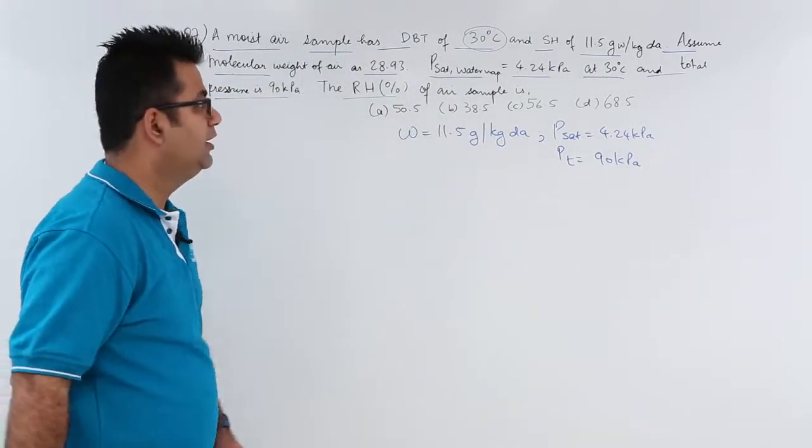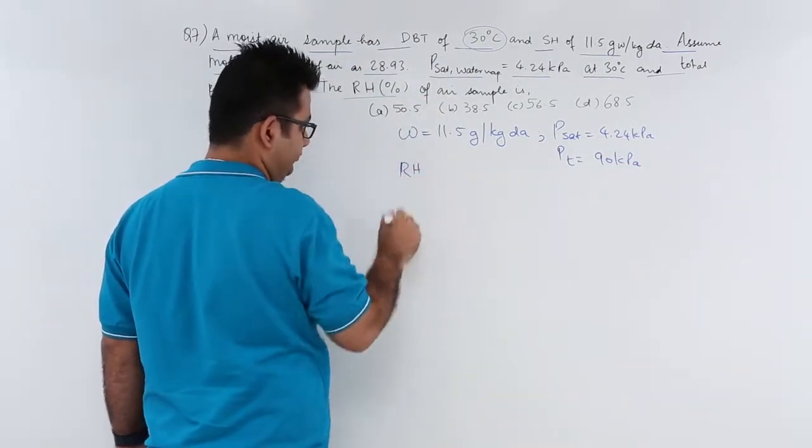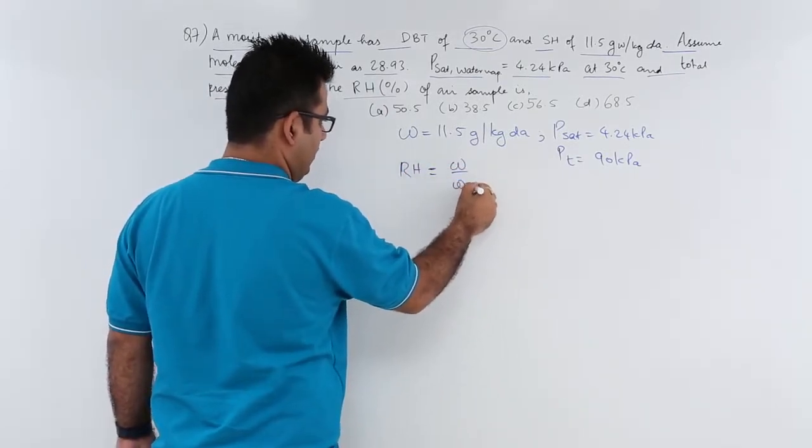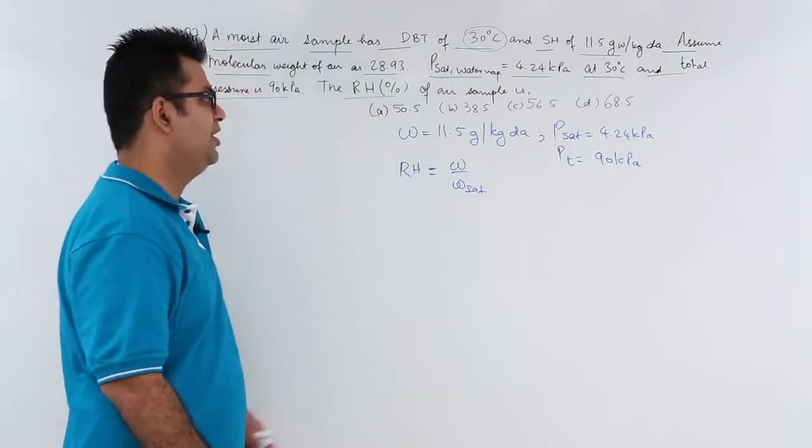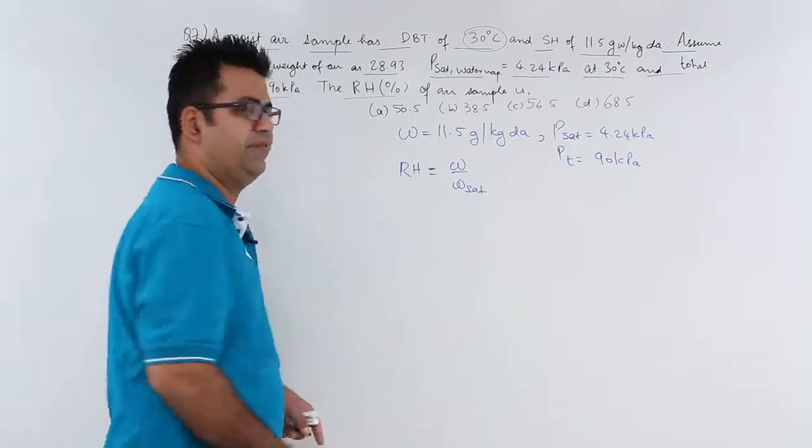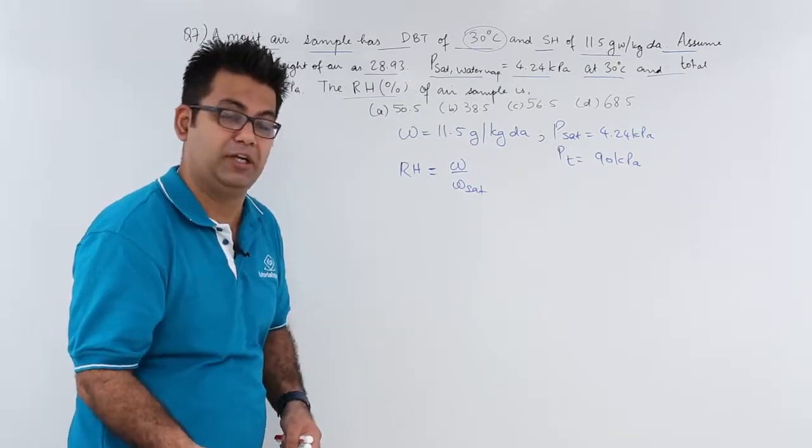Now if I talk about the total pressure which is 90 kPa, you have to find out RH. That is the ratio of specific humidity at some condition and the specific humidity at the saturated condition.